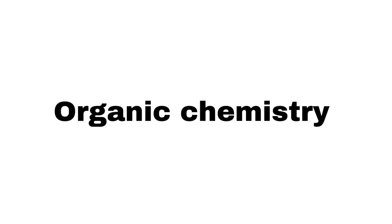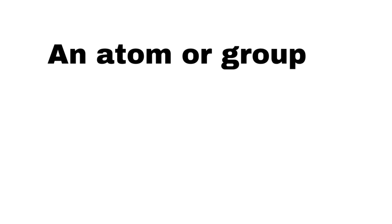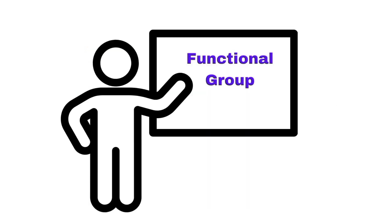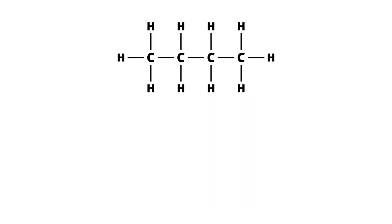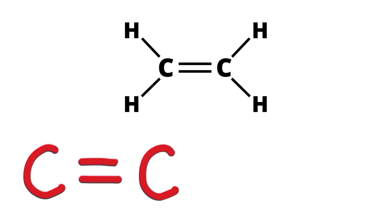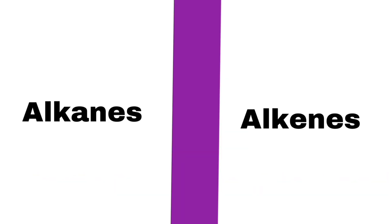To understand organic chemistry, it's very important to have knowledge of functional groups. A functional group can be defined as the atom, or group of atoms, or double bond, or triple bond, whose presence gives specific properties to organic compounds. When all carbon atoms contain only single bonds, we call them alkanes, and those which contain at least one double bond are known as alkenes. It is the single versus double bond which creates the difference between alkanes and alkenes, and that's called the functional group.